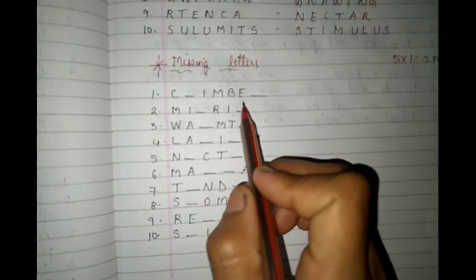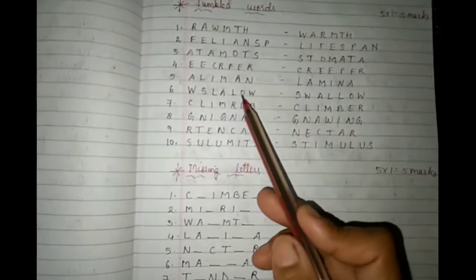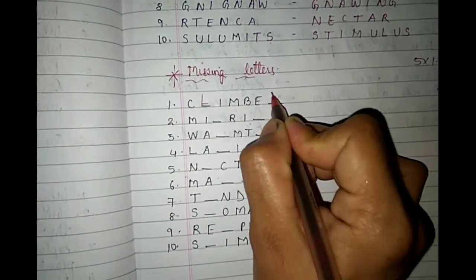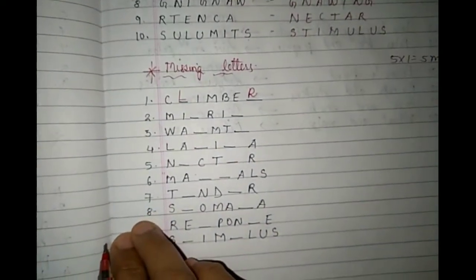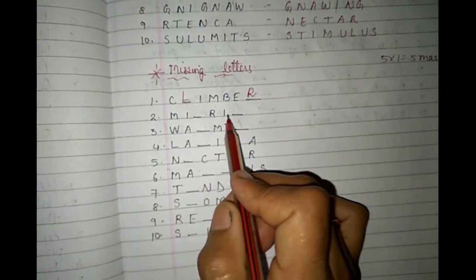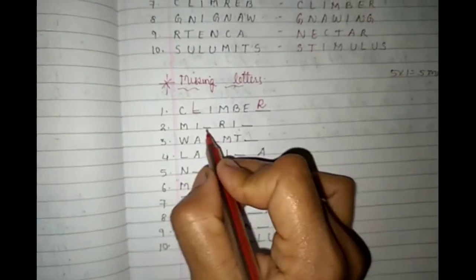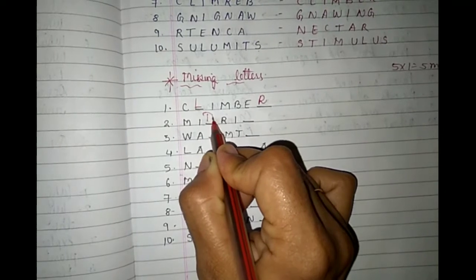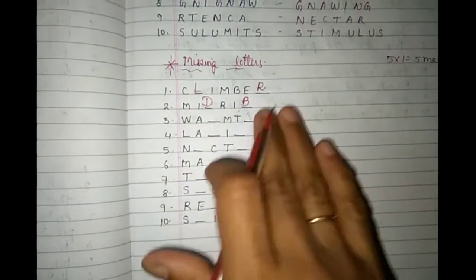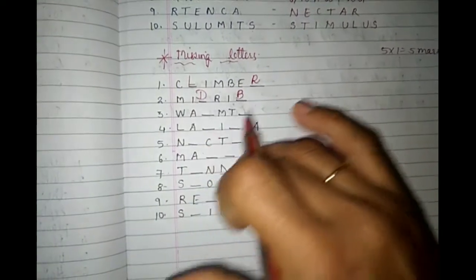First missing letter: C-dash-I-M-B-E-R. This was also there in the jumble words. If you look carefully: C-L-I-M-B-E-R. What does it become? Climber. Then: M-I-dash-R-I-dash. What could it be? M-I-D-R-I-B. What does it become? Midrib. Where is the midrib found? In the lamina — exactly in the center.